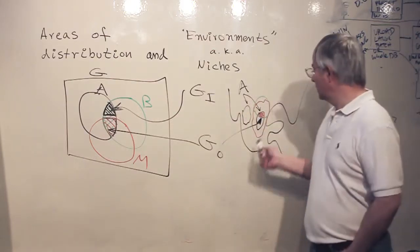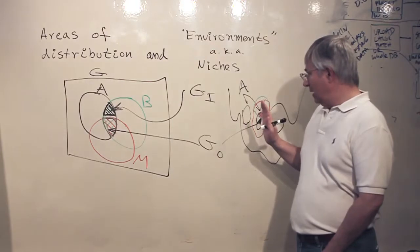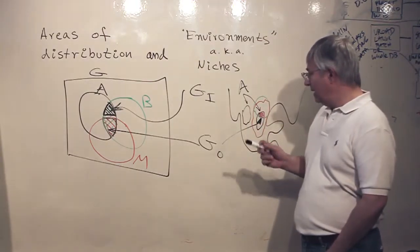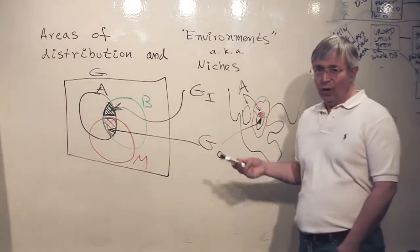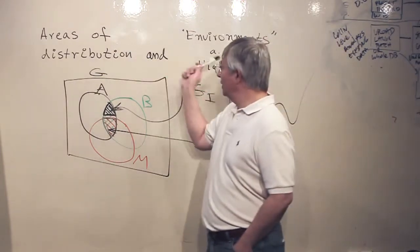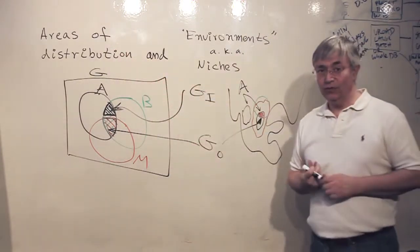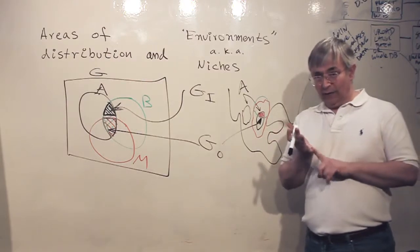Now, the last thing I want to explore about these things is the idea of where would you find the data. The data that you would be using to do your niche modeling of the areas of distribution is of two classes.